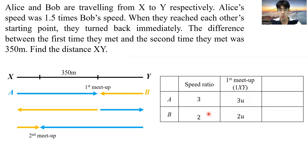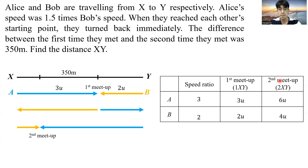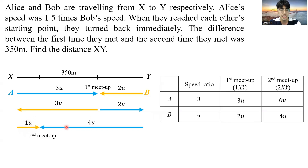If Alice can travel 3 units of distance in 1 XY, she can travel 6 units in 2 XY. Similarly, Bob travels 2 units and then 4 units. So the two yellow arrows add up to 4 units. Since we know this is already 3 units and this is already 2 units, this distance must be 1 unit and this must be 4 units, so the two blue arrows add up to 6 units and the two yellow arrows add up to 4 units.